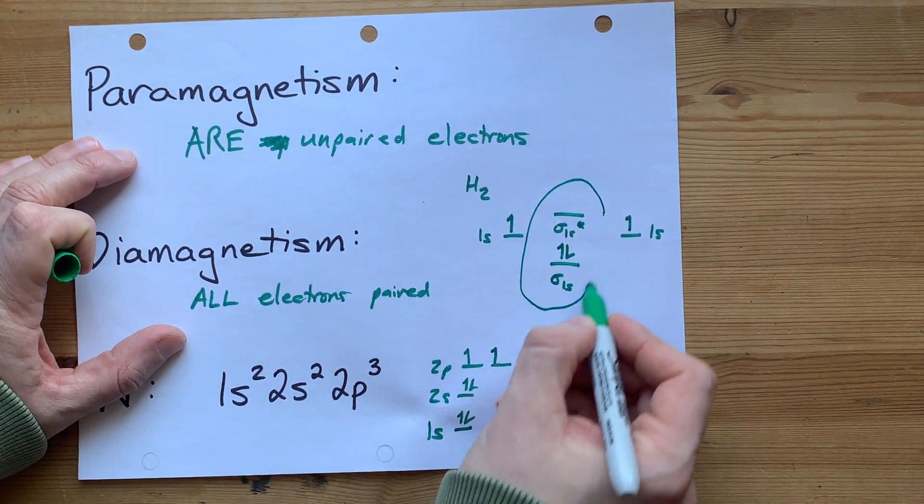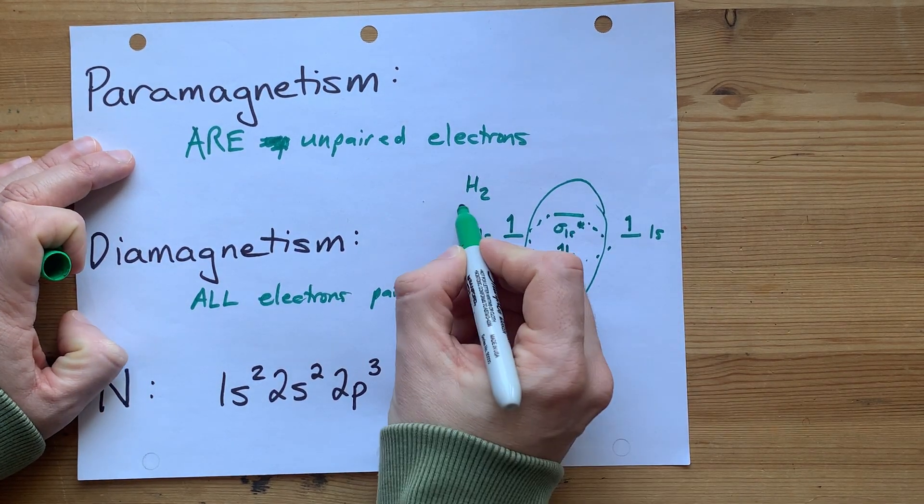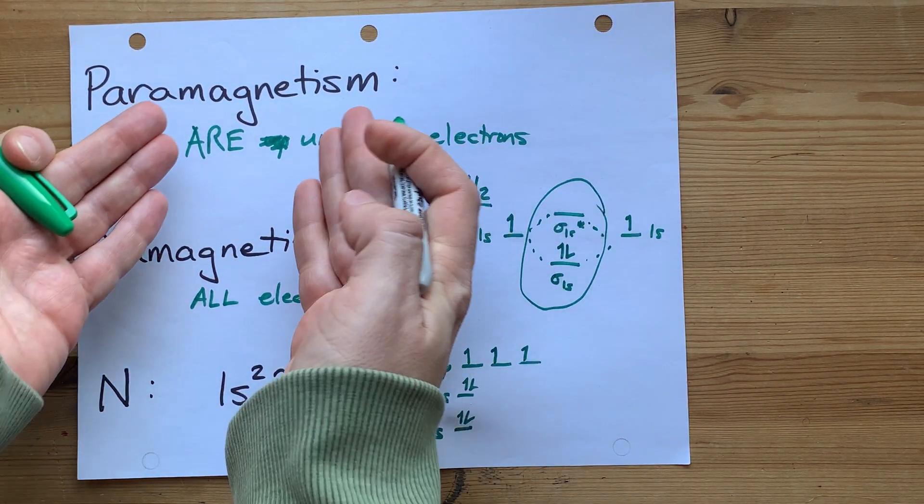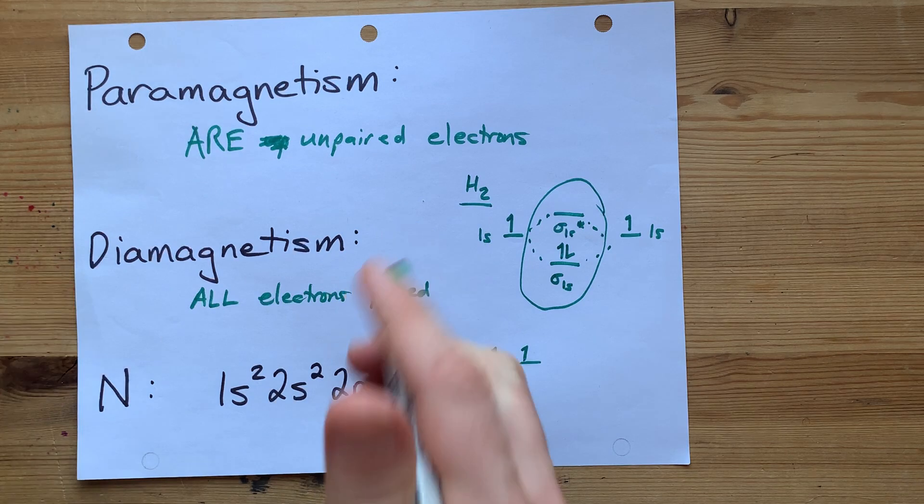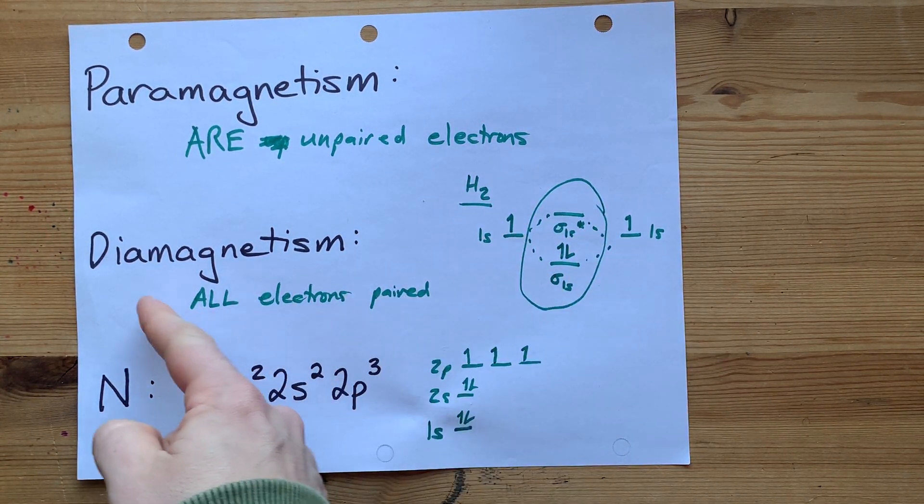All of the electrons are paired. And so H2 as a molecule does not have paramagnetism, and diamagnetism dominates. Your teacher would probably say H2 is diamagnetic.